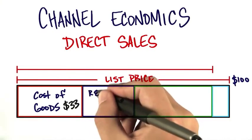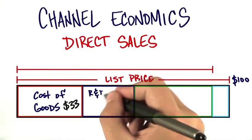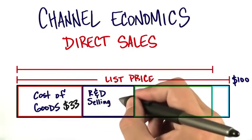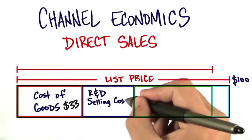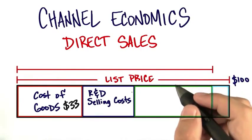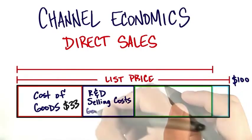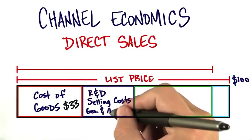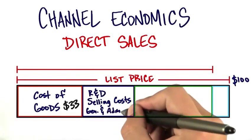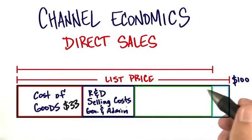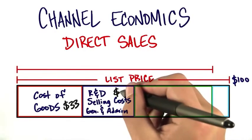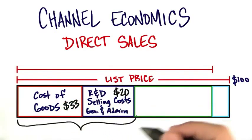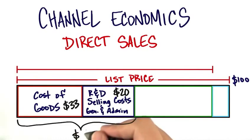Next, let's take a look at the costs of my R&D — that is my engineering — the cost of my direct sales people, maybe commissions or direct sales compensation, and then general and administration costs: what it cost me to have leases and lunches and free snacks. That might be another $20. So right now, it's $53 just to keep the lights on in my building.